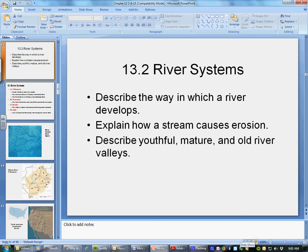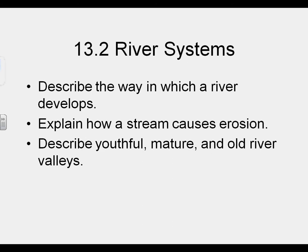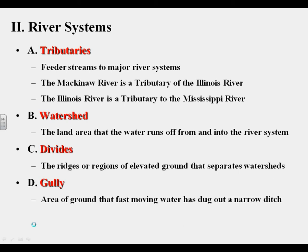Today we're going to talk about river systems and how things work in a river. In this section, we're going to describe the way in which a river develops — that's your first objective. Then we're going to explain how a stream can cause erosion, and then describe the stages of a river: old, mature, and young. Should be pretty easy.